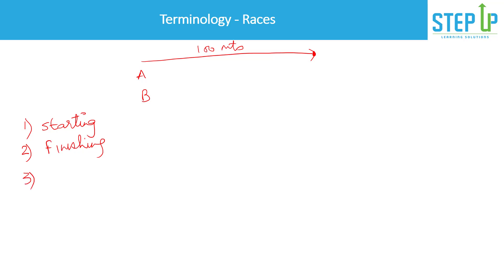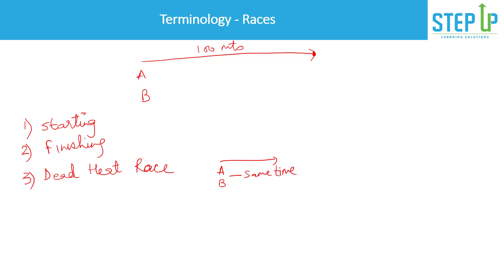Third is an important one that confuses many people. Sometimes the exam setter may say the race ends as a dead heat race. This means if two or more people — say A and B — both take the same amount of time to finish the race, there is no clear winner. That is a dead heat race.